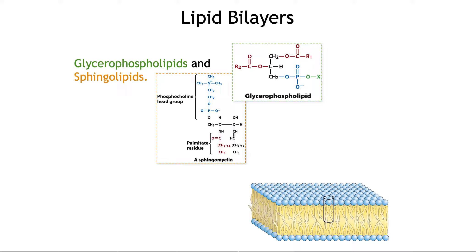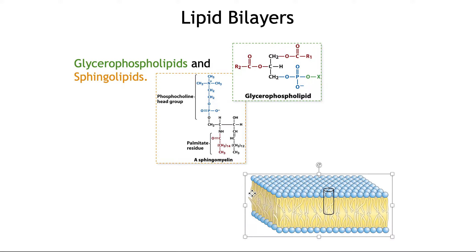If we take a look at a general feature of biological membranes, we'll notice that it's a double layer — basically a double layer of lipid that acts as a barrier for the passage of molecules across it. In a later section we'll learn about membrane proteins that help facilitate the diffusion of molecules across the lipid bilayer. If we take a look at the structure of glycerophospholipids and sphingolipids, we'll notice that they're amphipathic molecules.